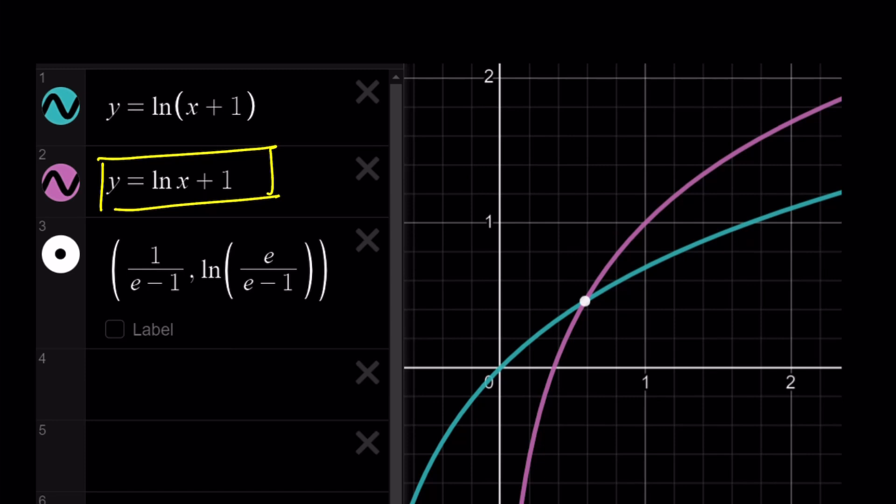So it's kind of shifted upwards. That's why there is always going to be a distance between these two, and the distance, actually, the gap is going to increase, which means that these two graphs are only going to intersect at a single point, and that is the point you're looking at. But we were trying to solve for x, so that will be 1/(e-1).